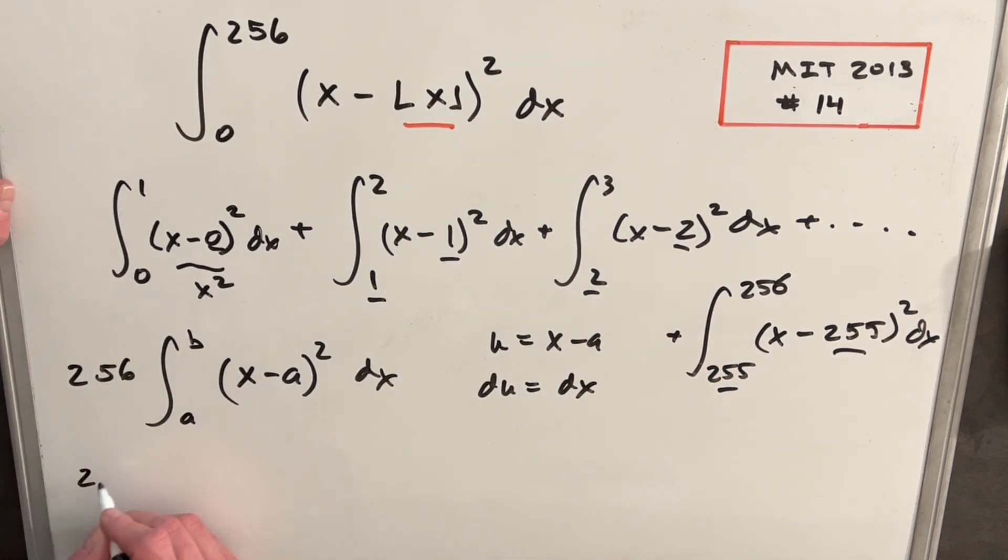So then we'll make this substitution. We've got 256 in front. I'm going to plug a b in here. So for our upper bound, we're going to have b minus a. We plug an a in here, we get zero. And then we just have u squared du.